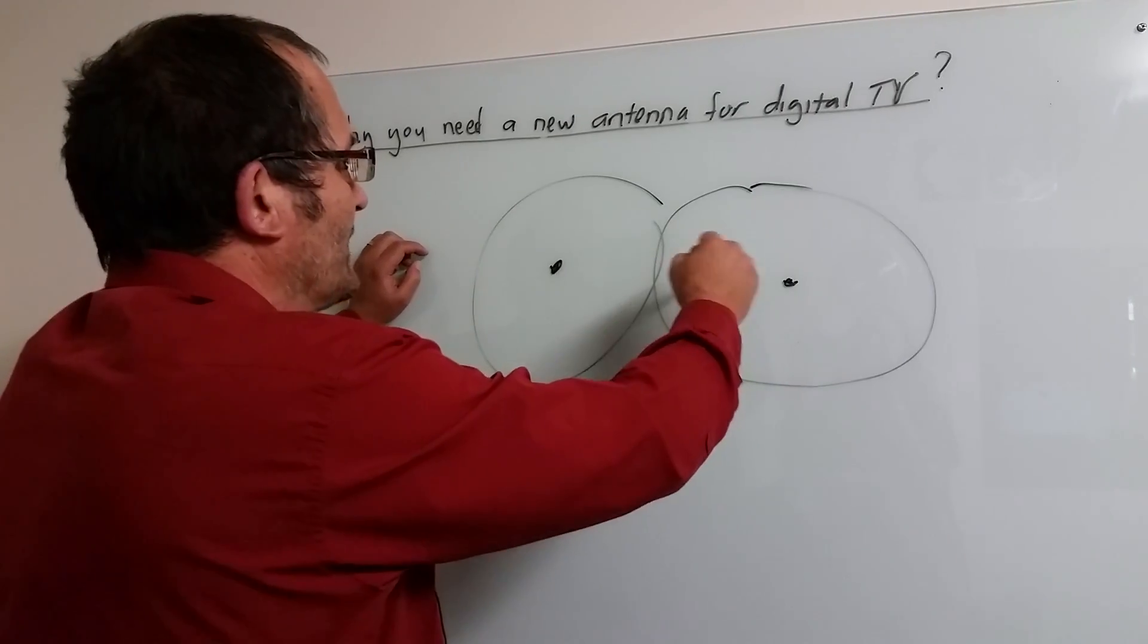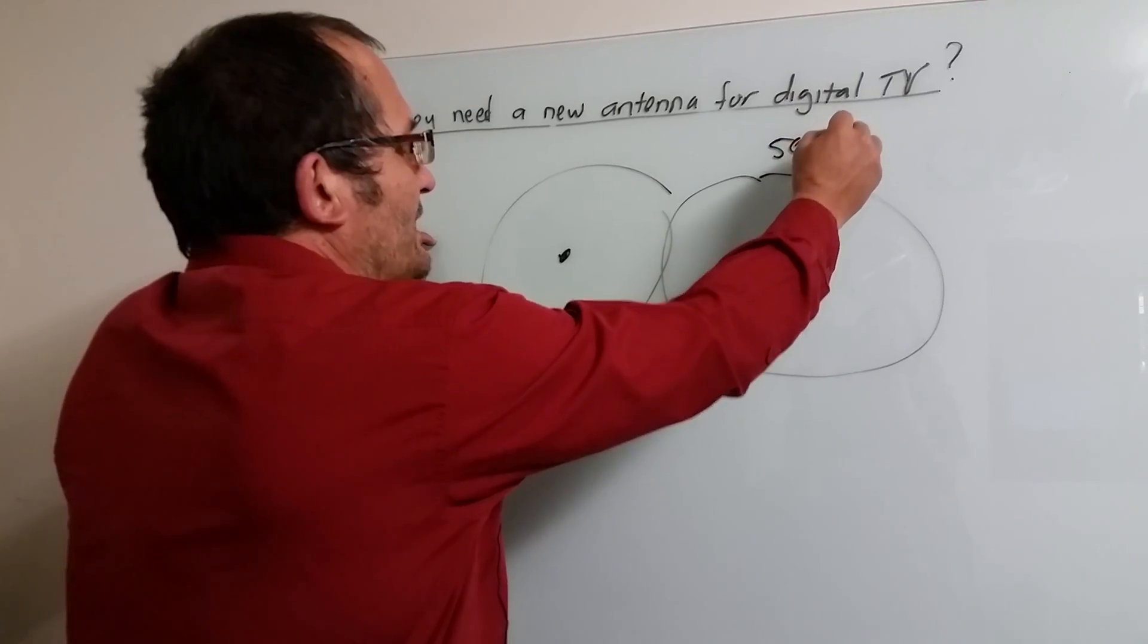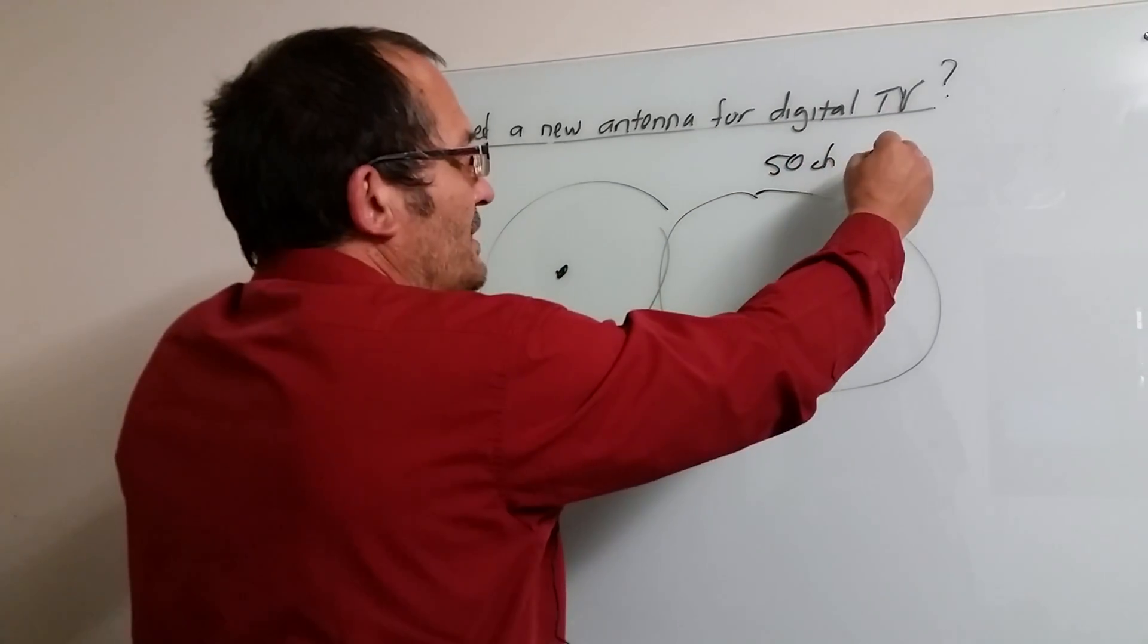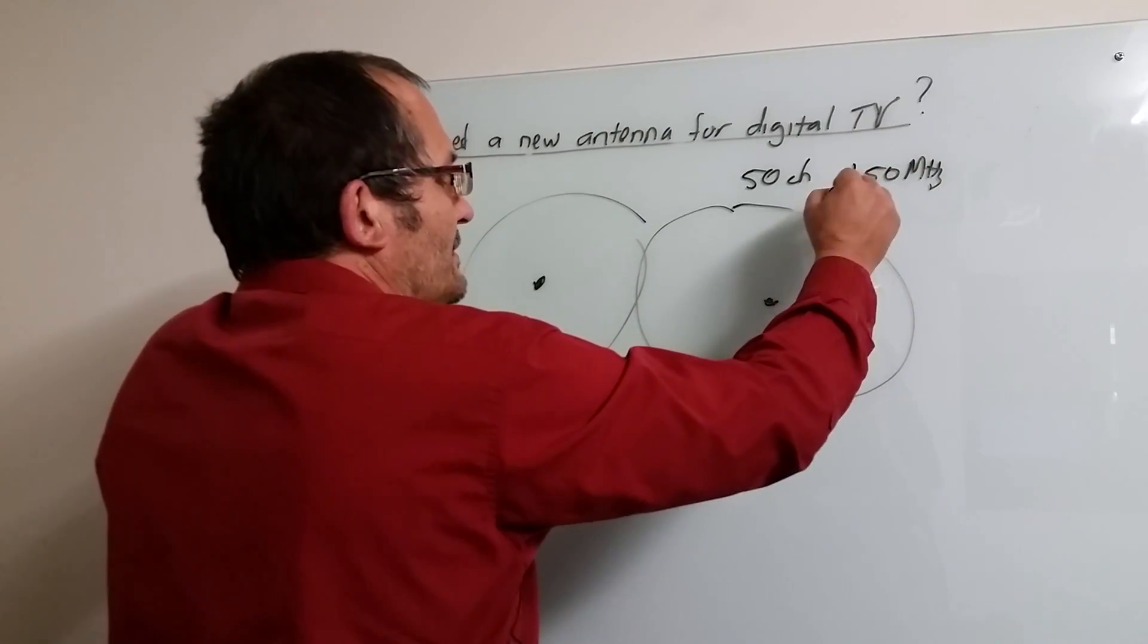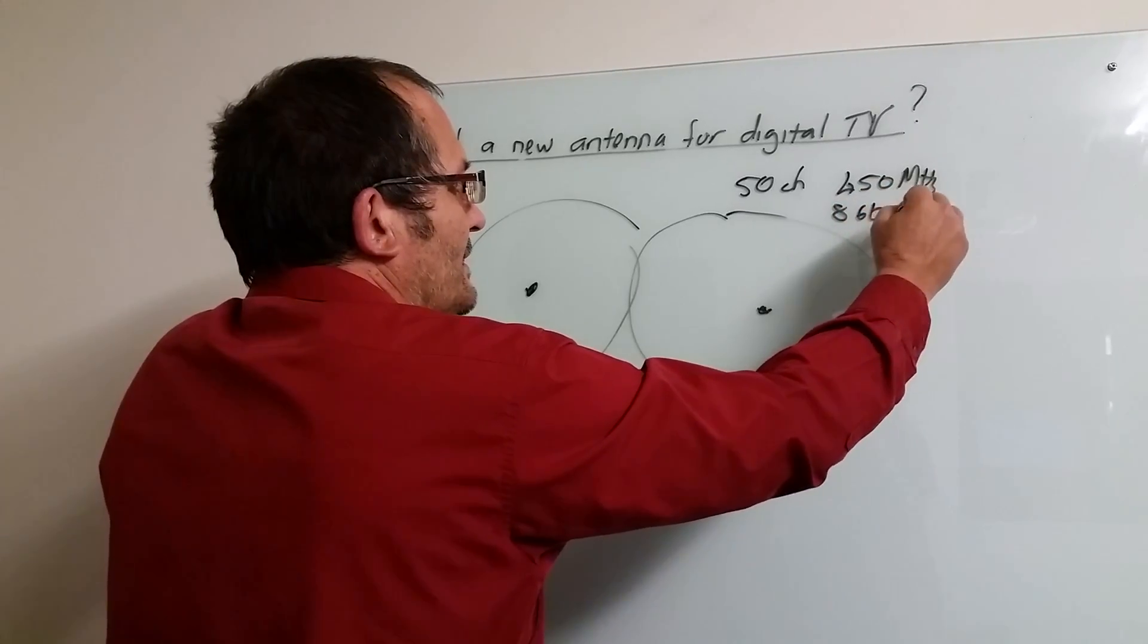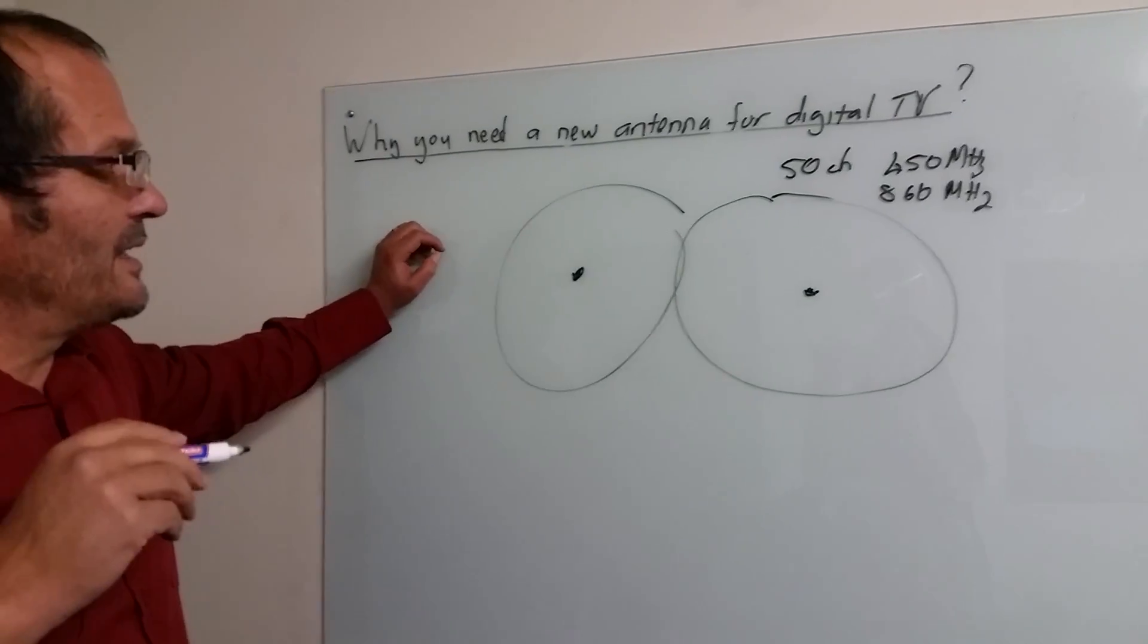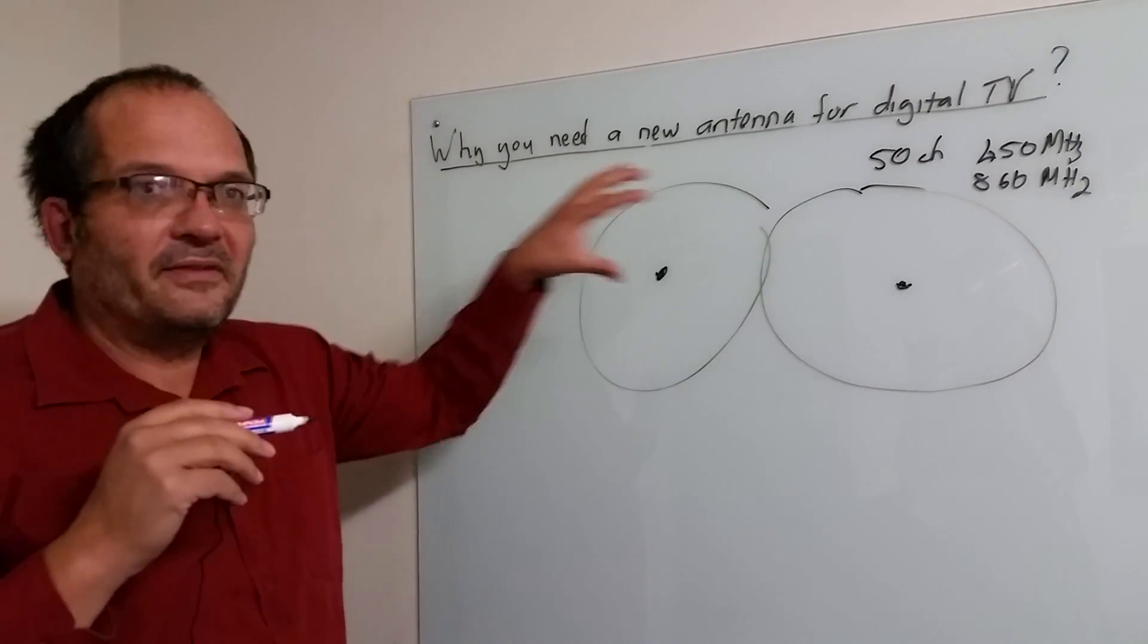But what's happening is you used to have broadcast towers and there's about 50 channels for example on VHF, each channel is eight megahertz wide. That's why you need to go from about 450 megahertz to about 860 megahertz in the UHF band. So antennas need to cover that band. Many antennas were designed into sub bands because the bands were shared between different regions by the broadcasters.